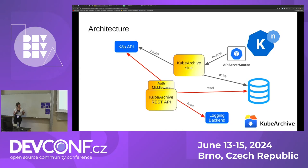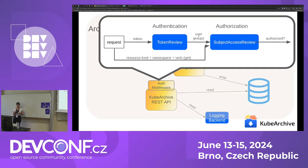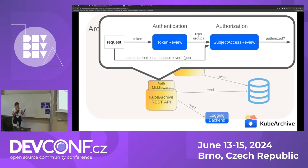There is also an arrow connecting the kubearchive REST API with the Kubernetes API, and that's because of the authentication and authorization middleware. We wanted to defer authorization to the RBAC authorization of Kubernetes. For that, we use the Token Review and Subject Access Review resources from Kubernetes. The workflow is: we receive a request with a bearer token, create a Token Review to ask Kubernetes who owns the token and what groups the user belongs to, then with that information plus the resource and namespace, we create a Subject Access Review to ask Kubernetes if this user is authorized to perform this operation.